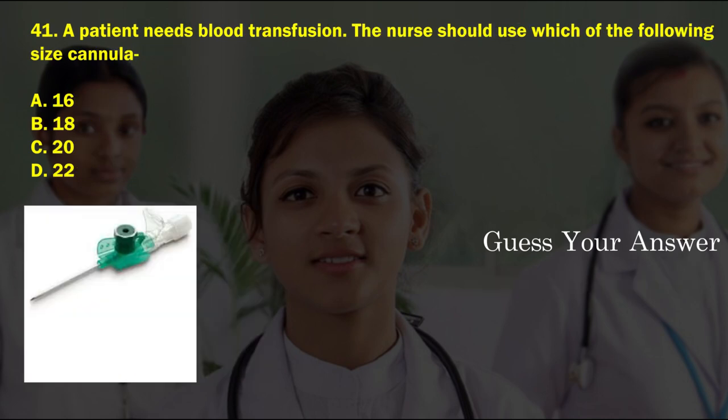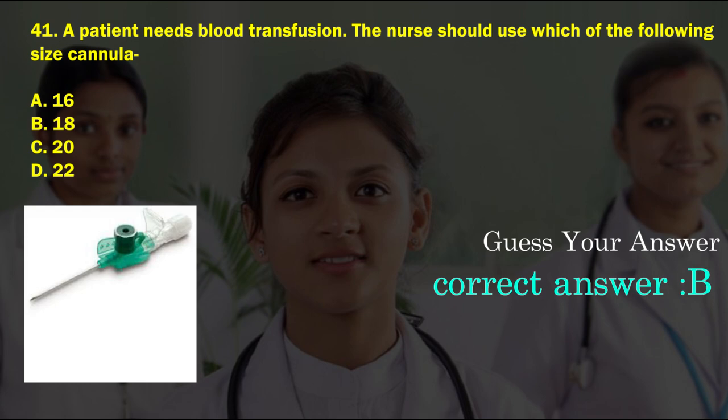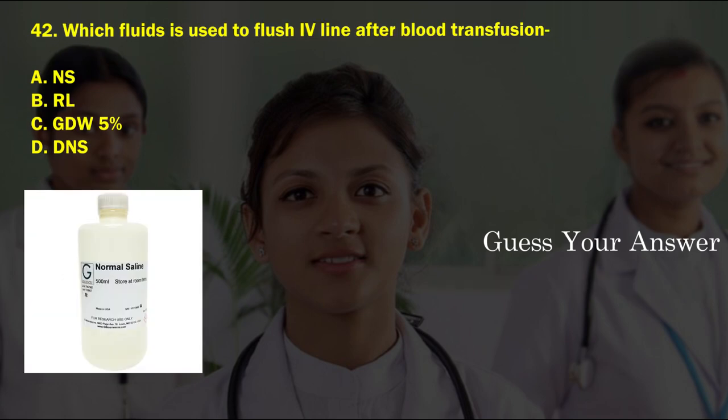A patient needs blood transfusion. The nurse should use which of the following size cannula? Option A: 16 gauge, option B: 18 gauge, option C: 20 gauge, option D: 22 gauge. The correct answer is option B, 18 gauge.